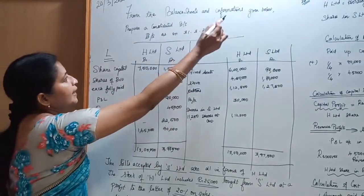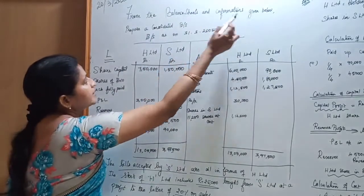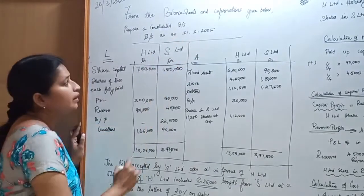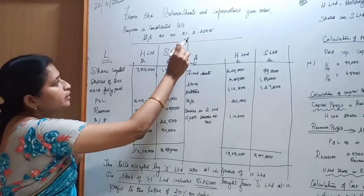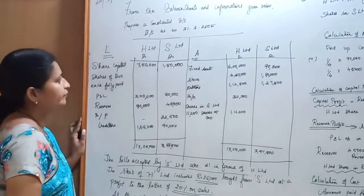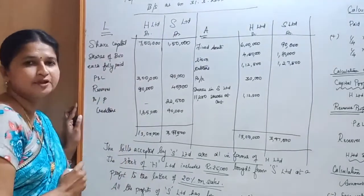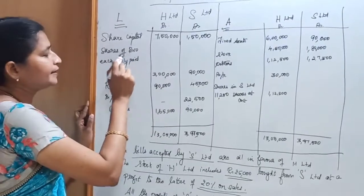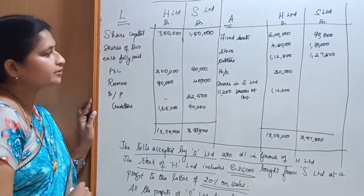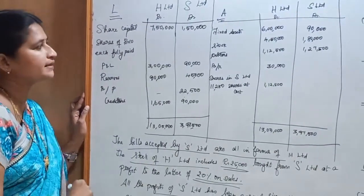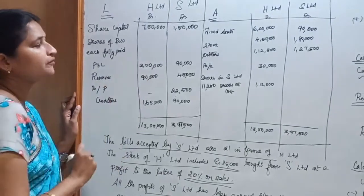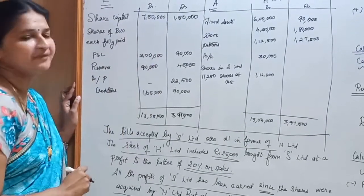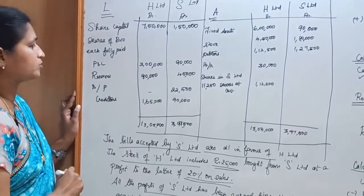From the balance sheets and information given below, prepare a consolidated balance sheet as on 31-3-2005. Coming to the liability side of the balance sheet: share capital with shares of Rs.10 each fully paid. So the face value of one share is Rs.10. The share capital of H Limited is Rs.7,50,000 and the share capital of S Limited is Rs.1,50,000.